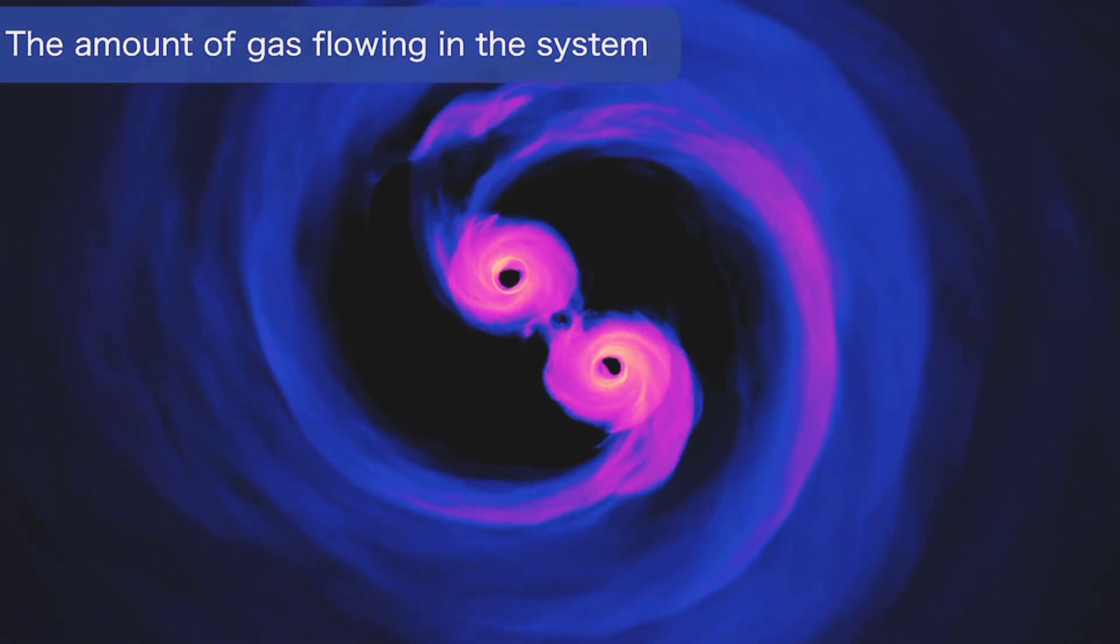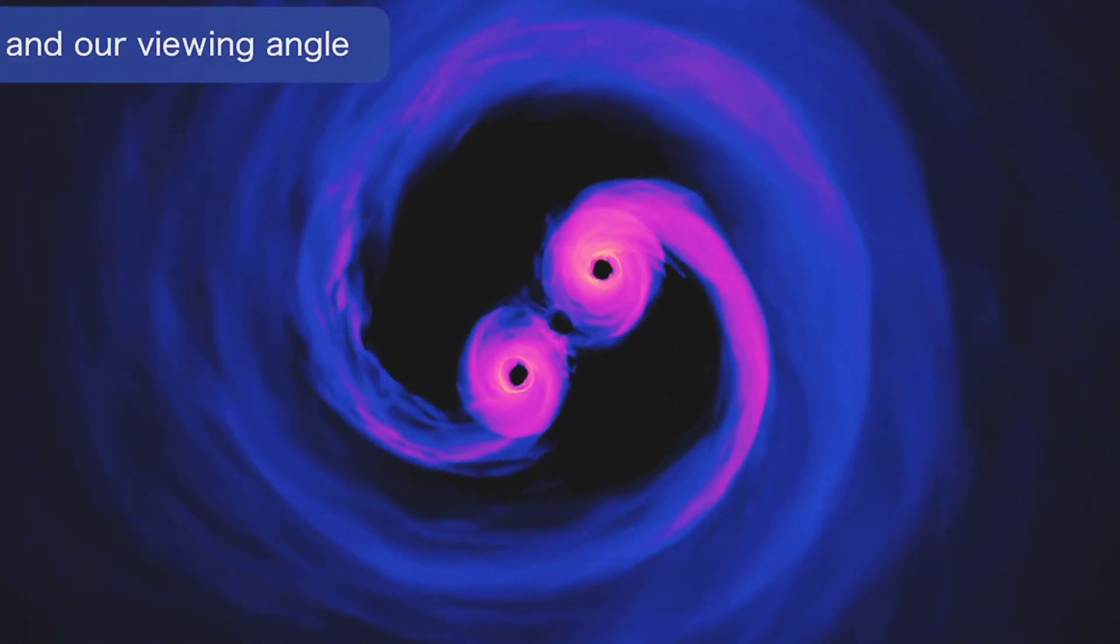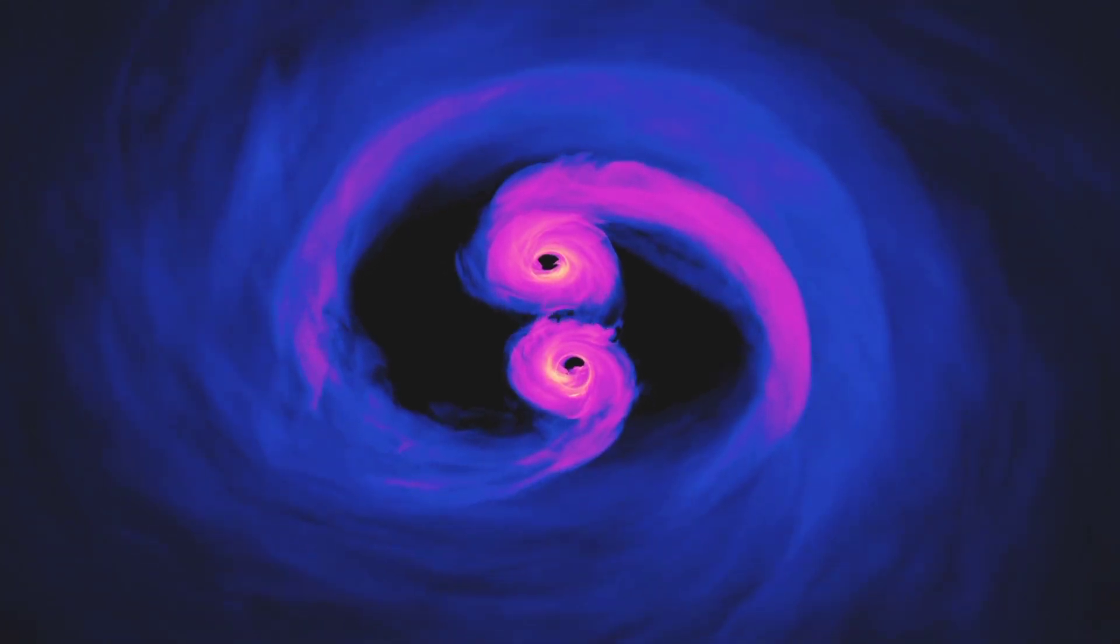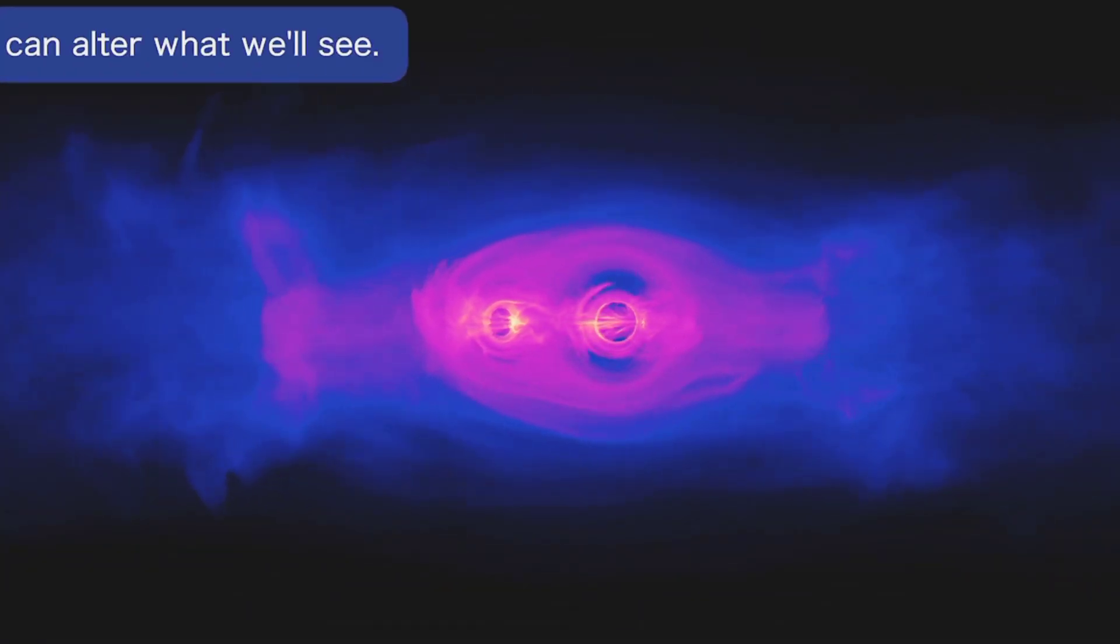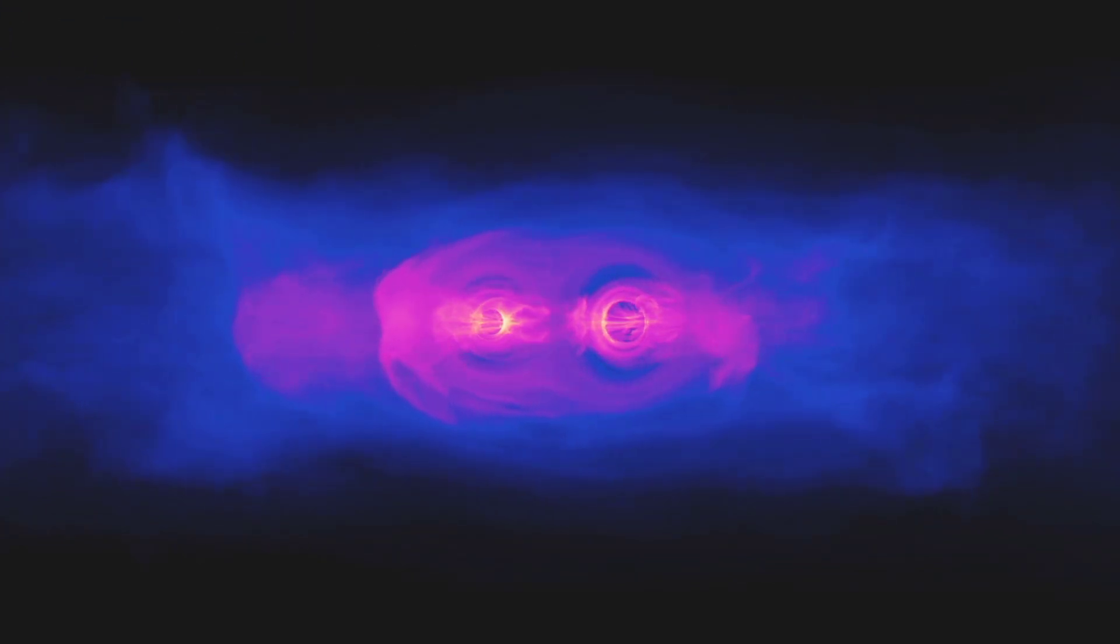As the giants approach, three glowing regions of gas appear, each connected by hot, swirling streams. A large ring of gas surrounds them all, glowing brilliantly.